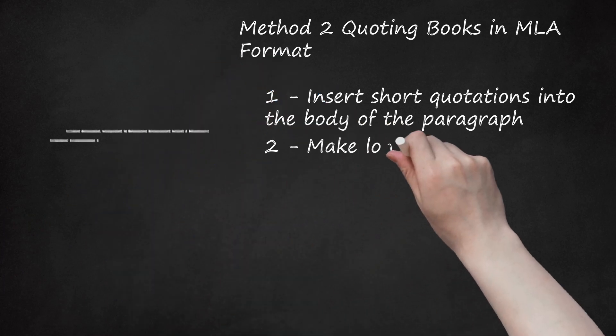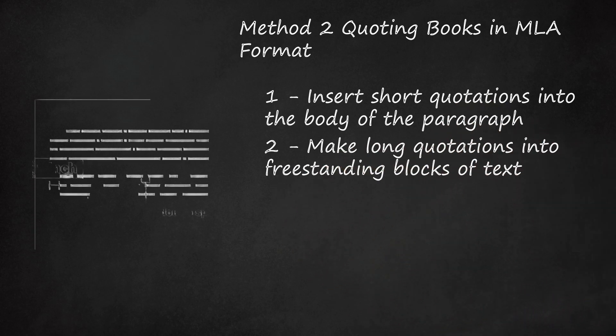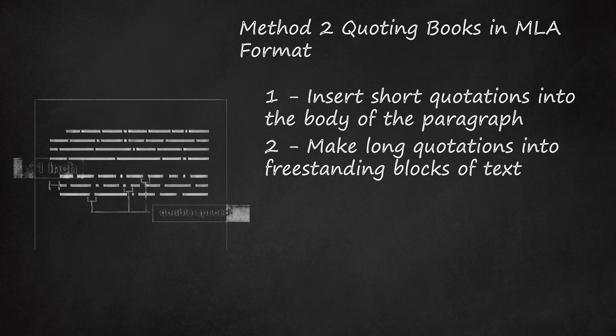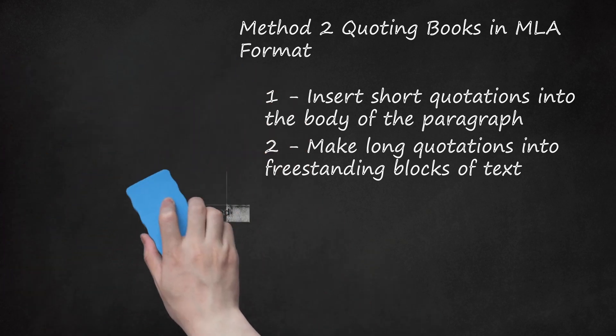Step 2: Make long quotations into freestanding blocks of text. When quoting an excerpt longer than four lines of prose or three lines of verse, start by writing a signal phrase introducing the quotation. Begin the quotation on a new line below this. Indent the whole quotation one inch from the left. Double-space it — in an MLA-style research paper, everything should be double-spaced. Do not use quotation marks.